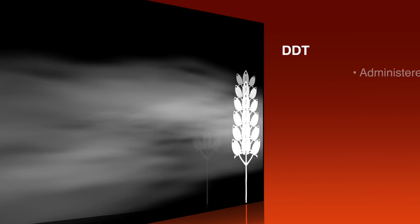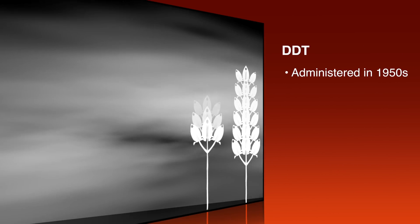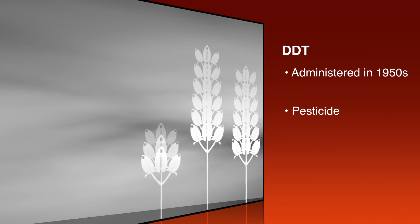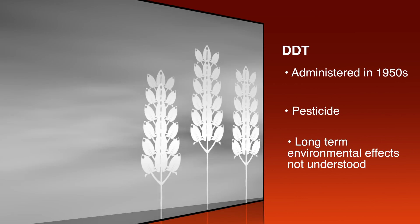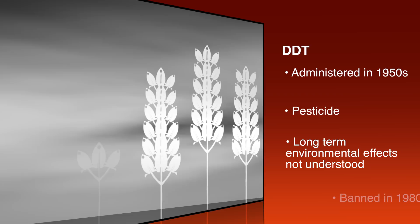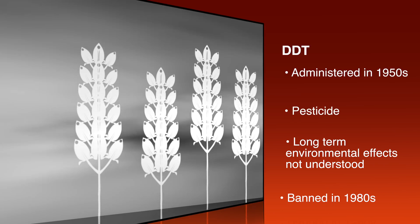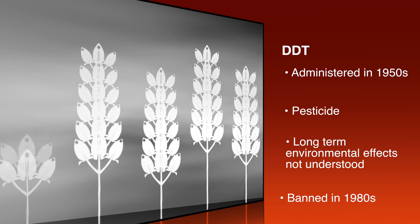When a compound called DDT was first administered as a pesticide in the 1950s, its long-term environmental effects were not understood, and only around three decades later was the pesticide banned in Australia.